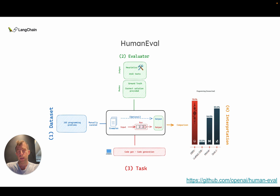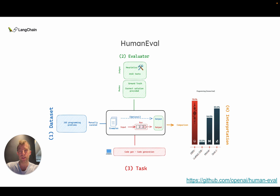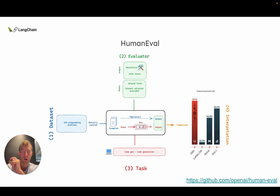HumanEval is a really good one. It was produced by OpenAI back in 2021. It has 165 programming problems, so it's basically related to the task of code generation. What's interesting is the evaluation method — you can think of it in two ways: who's the judge, and what's the mode of evaluation? In this case, the mode is ground truth. There's a correct answer for every coding problem, and unit tests provide a programmatic way of specifying correctness. Interpretation is typically reported as bar charts — here I'm showing results from the recent Databricks model, which reports HumanEval.